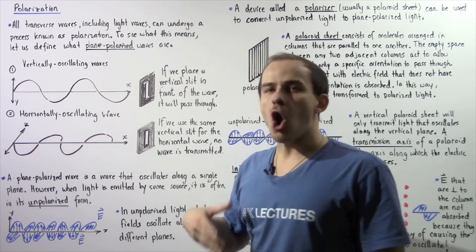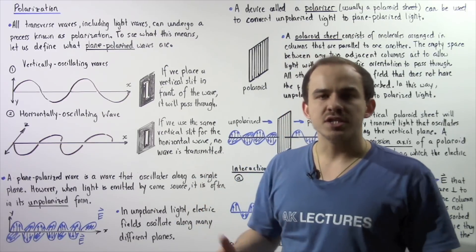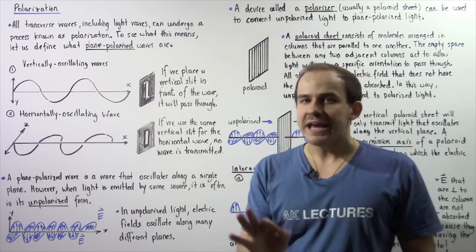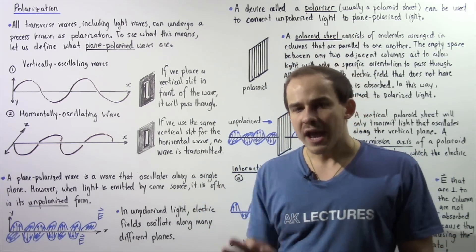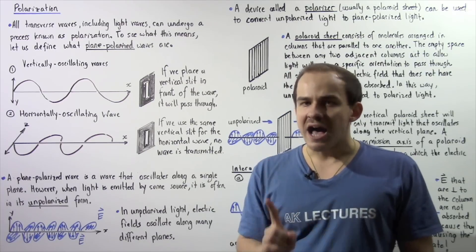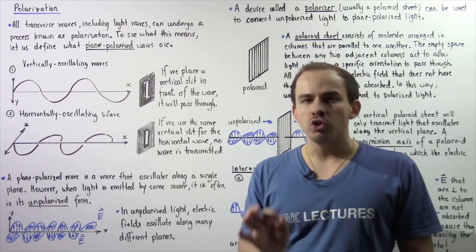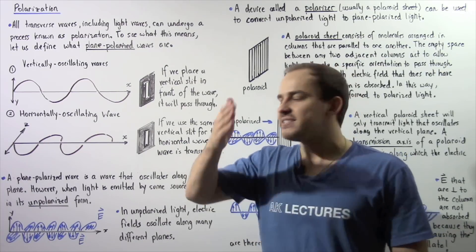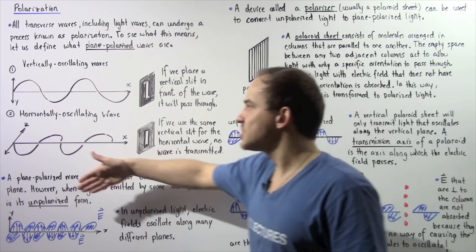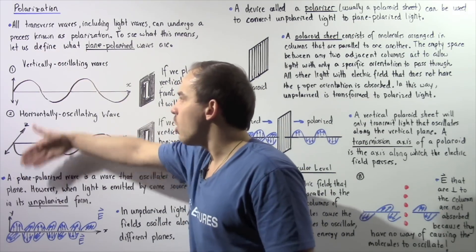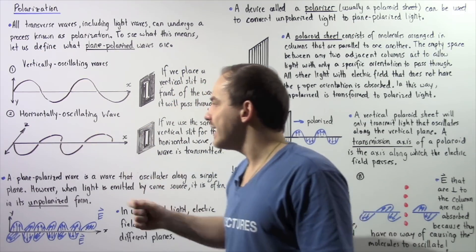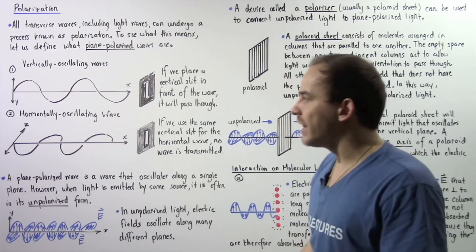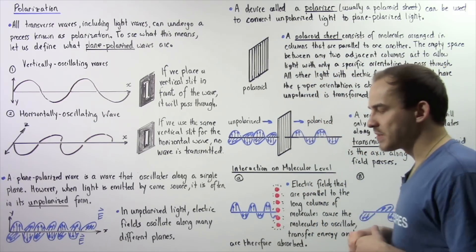These two waves are examples of plane polarized waves. A plane polarized wave is a wave that oscillates along a single plane and a single direction — in Diagram 1 along the y-axis, and in Diagram 2 along the z-axis.